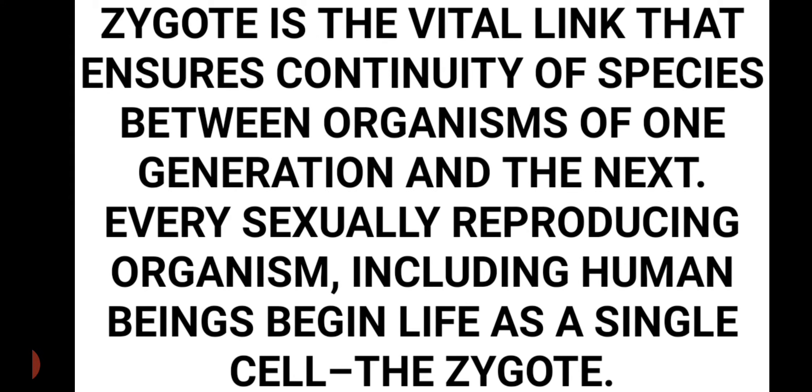The zygote is a vital link that ensures the continuity of species between one generation and the next. It is the connecting link between the parents and the offspring. Every sexually reproducing organism, including human beings, begins life as a single cell — the zygote.